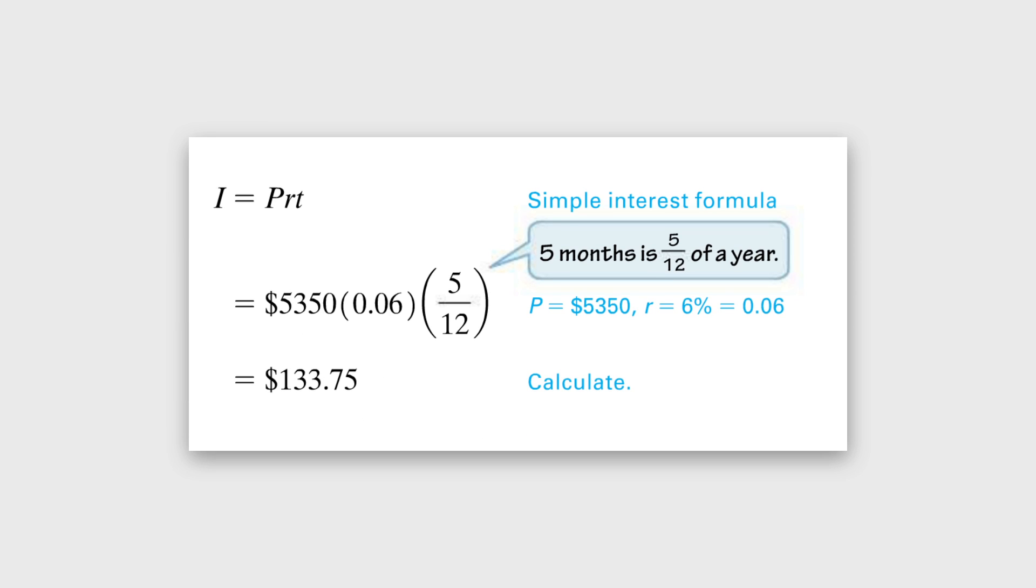As you can see in this example, the rate has been converted to a decimal and the time has been converted in years.